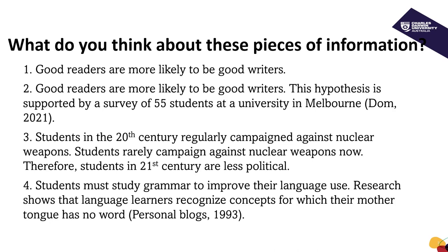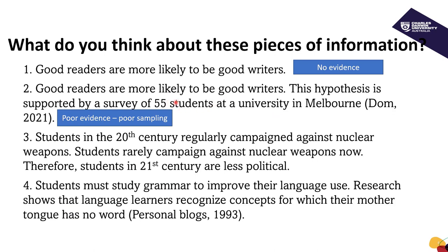Have you finished? Great! Now let's analyze together. What do you think about the first example? You can see that in the first example the information is not reliable because there is no evidence. In the second example it is a little bit better because we have the evidence here — 55 students at a university in Melbourne.